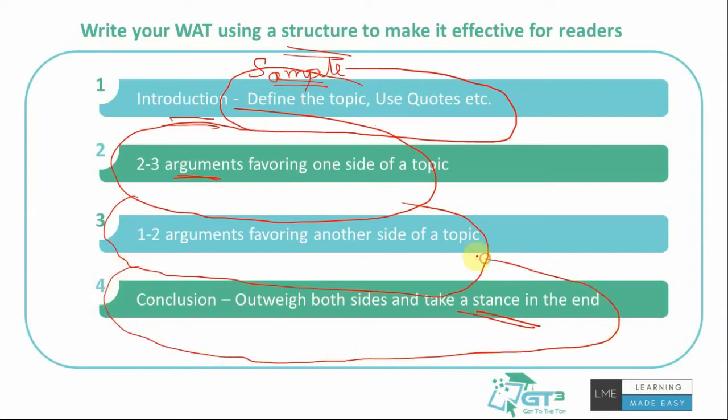Finally, it's really important to have a proper conclusion. It's not necessary to take a strong stance — you can be diplomatic, slightly lean toward one side, or take a clear position. Whatever you choose is fine, but even if you take a strong stance, make sure you've written arguments for both sides — fewer for the opposing view and more for your favored side. The flow should show the reader that you considered both perspectives and concluded that one side outweighs the other, rather than simply ignoring one side entirely.